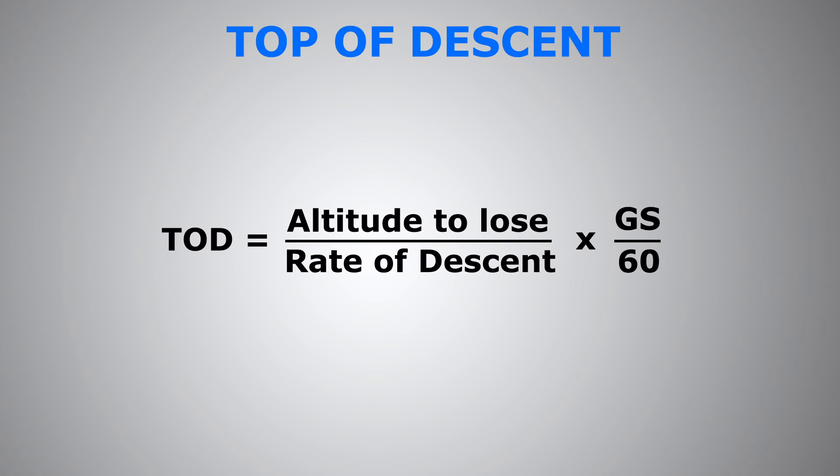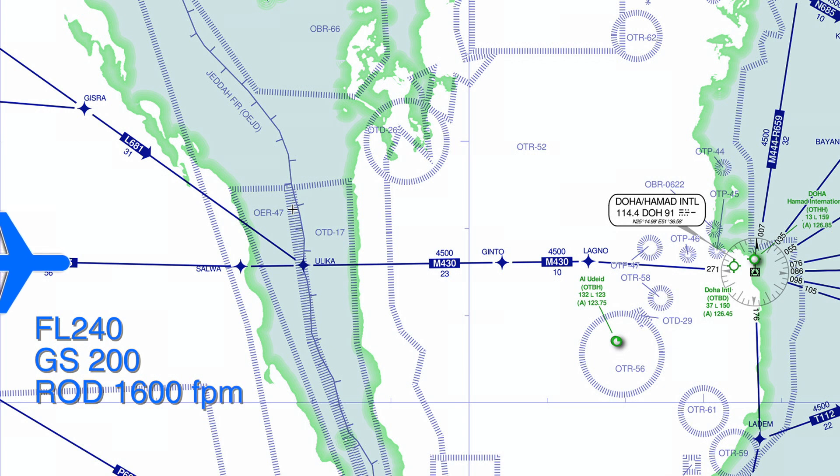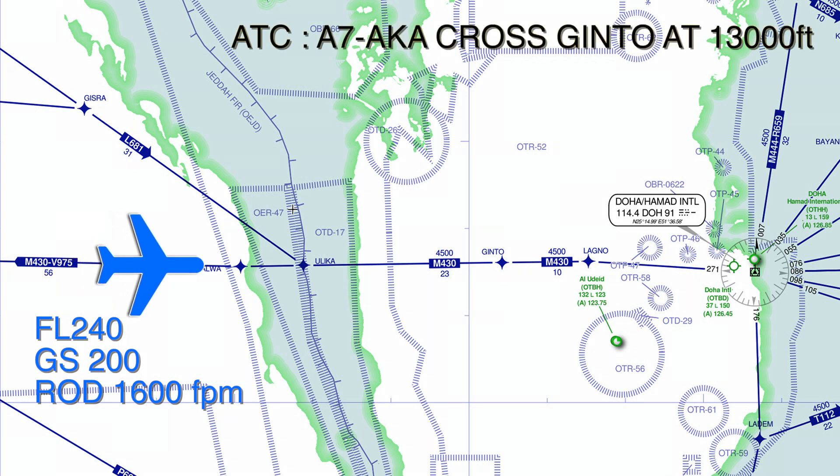So let's look at an example for better understanding. Say for example we're flying currently at flight level 240, maintaining ground speed 200 knots, and we would like to initiate a descent at 1600 feet per minute.